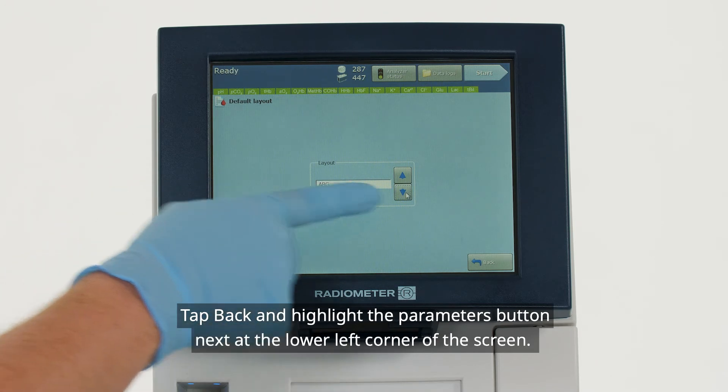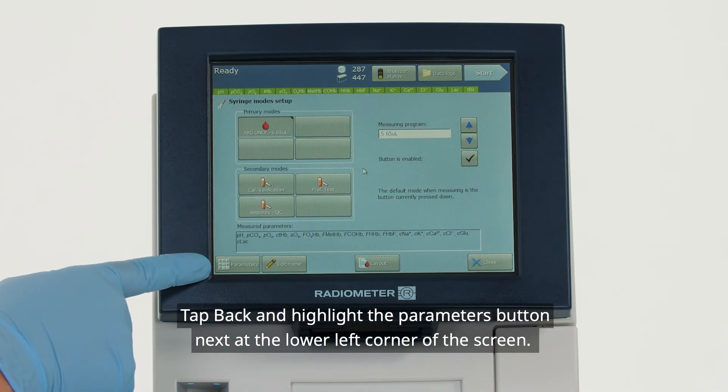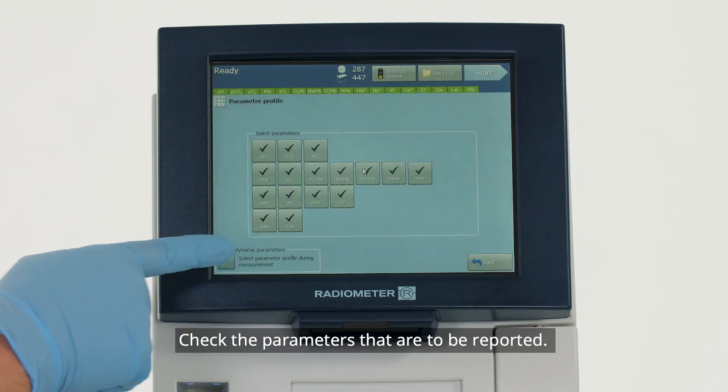Tap back and highlight the Parameters button at the lower left corner of the screen. Check the parameters that are to be reported.